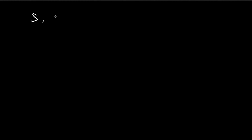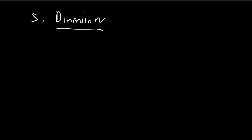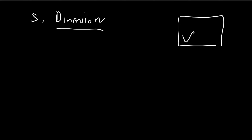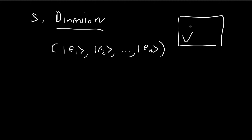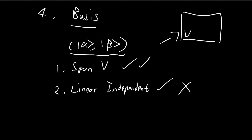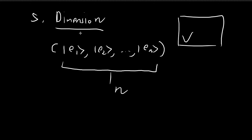The fifth and final concept is dimension. If a vector space v has a basis consisting of n vectors, then the dimension of that vector space is simply n — the number of vectors in the basis. For the set of all complex numbers, our basis has two vectors, so the dimension is two.